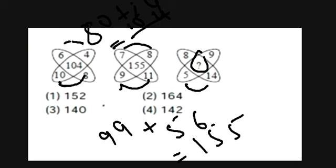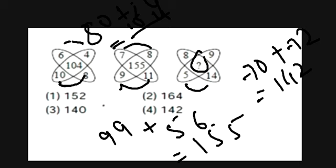We will do the exact same thing here, 5 into 14 is 70, and 8 nines are 72, 70 plus 72 is 142, and our answer is 142, which is the fourth option.